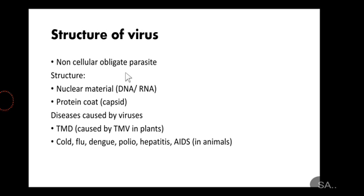If you look at the structure of the virus, it's very simple. It has nuclear material in the form of DNA or RNA, and that nuclear material is protected inside a protein coat that is made up of capsomers and is known as capsid.